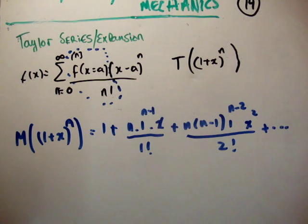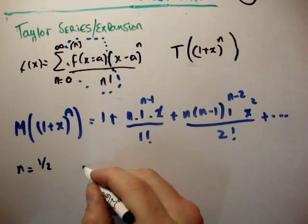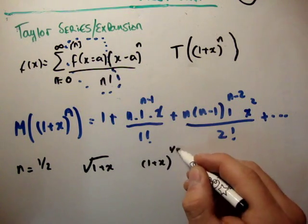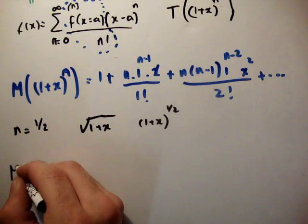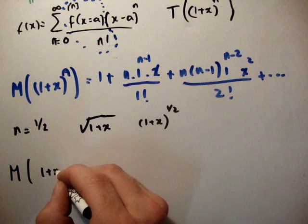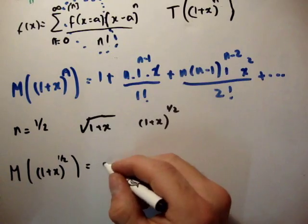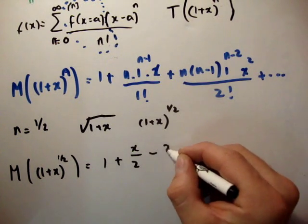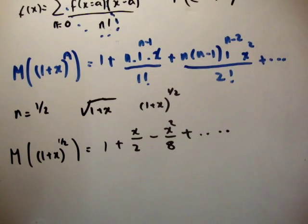So, what happens if we set a power of n to the half? Let's say n is equal to half. In other words, I want to get the square root of 1 plus x, or 1 plus x to the half. Let's say if I want to get the square root of something. So, that means we need to set n as a half. And if we set n as a half, we're going to get the following. We're going to get 1 plus x over 2 minus x squared over 8 plus, and off into infinity.